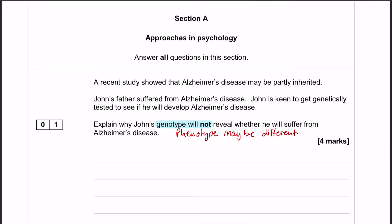So enough chat. Let's get straight on with section A, which is approaches. Question one in this paper is this — we get a little bit of a stem here to have a look through. It's effectively a biological approach question, and it is all about genotype and phenotype. The question is: explain why John's genotype will not reveal whether he will suffer from Alzheimer's disease.